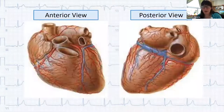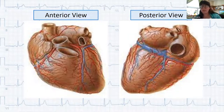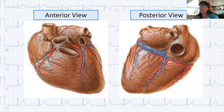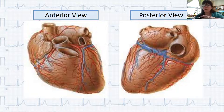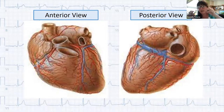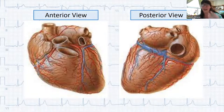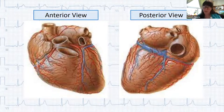Regarding the vessels: coronary arteries supply oxygenated blood to the heart, and cardiac veins remove oxygen-depleted blood. Issues arise when the heart demands more oxygen than the system can supply — that's when we see different types of coronary syndromes. The aorta branches into two main coronary arteries — right and left — located just behind the aortic semilunar valve, supplying the heart with blood during diastole through passive movement.